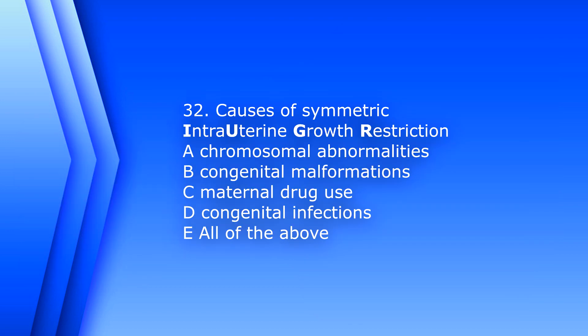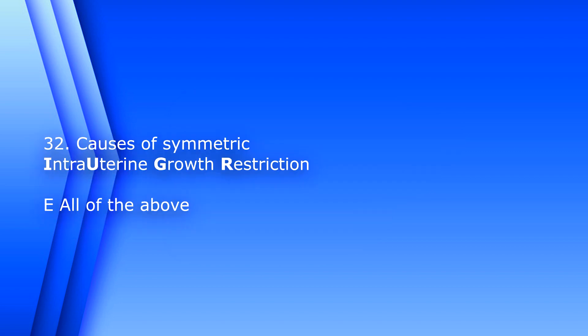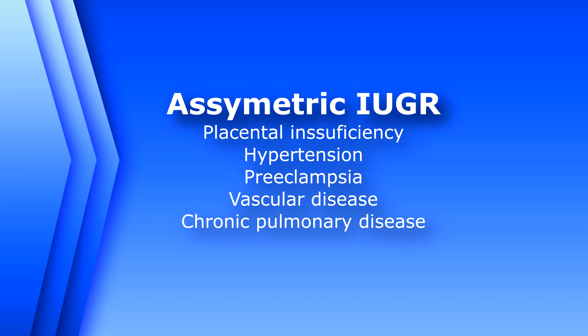Question 32: Causes of symmetric intrauterine growth restriction include A) chromosomal abnormalities, B) congenital malformations, C) maternal drug use, D) congenital infections, or E) all of the above. The answer is E, all of the above. Some causes of asymmetric IUGR are placental insufficiency, maternal hypertension, preeclampsia, maternal vascular disease, and chronic pulmonary disease.